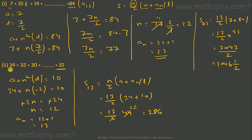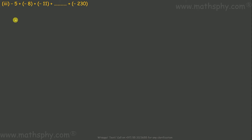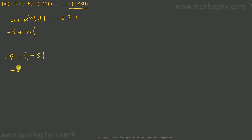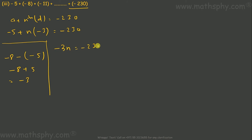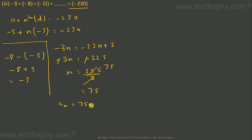For the third series, we need to find which term -230 is. Using a + (n-1)d = -230, where a = -5 and d = -8 - (-5) = -3: -5 + (-3)n = -230, so -3n = -225, giving n = 75. Therefore the term index is 75 + 1 = 76, so -230 is the 76th term.